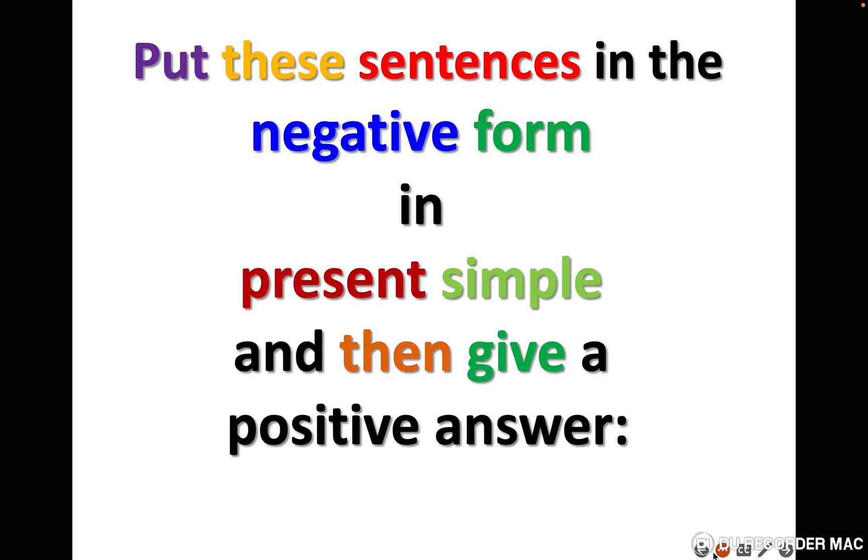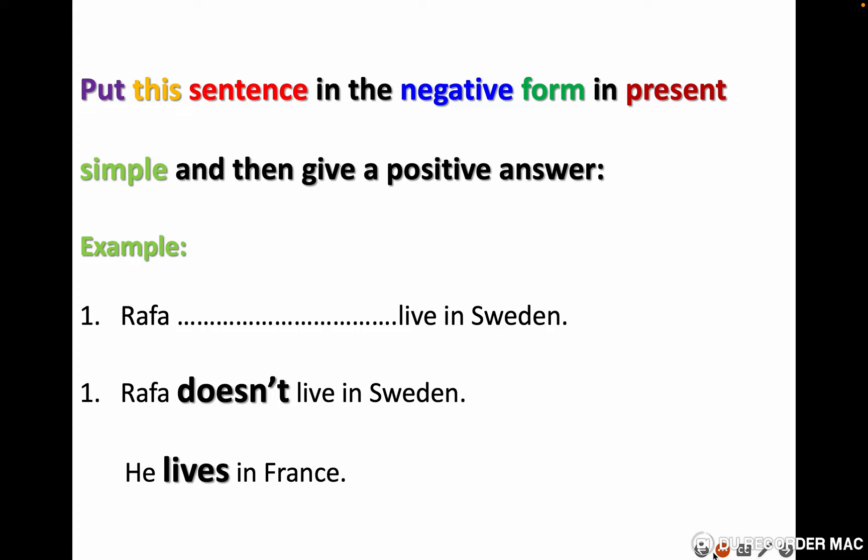Number eleven: put these sentences in the negative form in present simple, then give a positive answer. Example: 'Rafa live in Sweden' — the negative form is 'Rafa doesn't live in Sweden' and the positive answer is 'He lives in France.' You are going to do the same: first put the negative form, then answer in positive form.